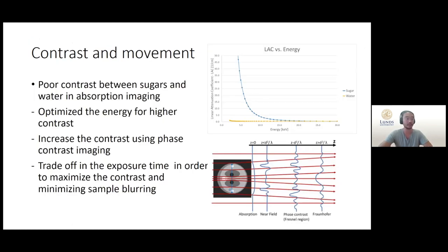The other challenges we have is to obtain a contrast between sugar and water in the absorption range. In this graph here we see the linear attenuation coefficient plotted against the energy. To obtain a good contrast between sugar and water we need to have a difference between these, and as you can see this only happens at the lower energy levels. This can of course cause trouble when we need high flux to achieve a short exposure time. There's possibility that we can overcome this problem by using phase contrast imaging, but at the end it's a trade-off in exposure time in order to maximize the contrast and at the same time minimizing the sample blurring.